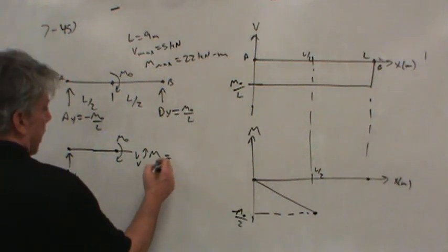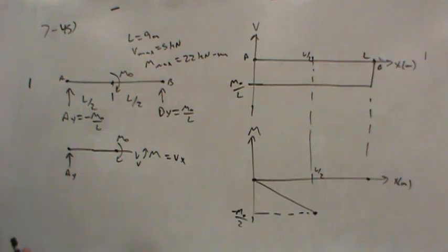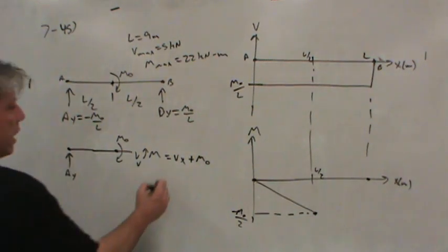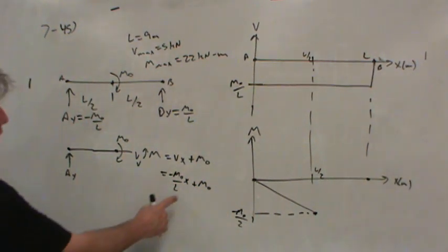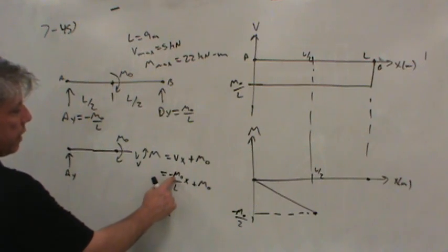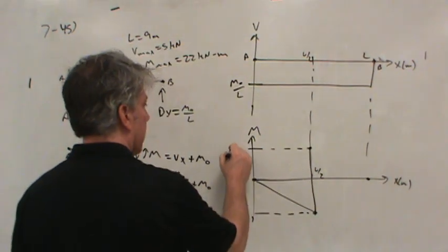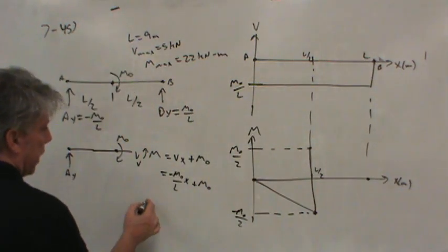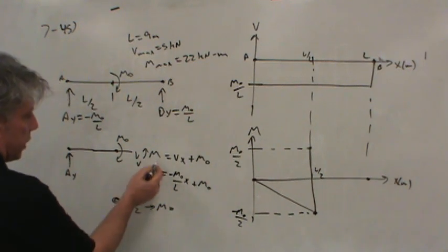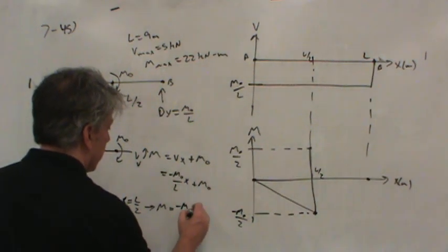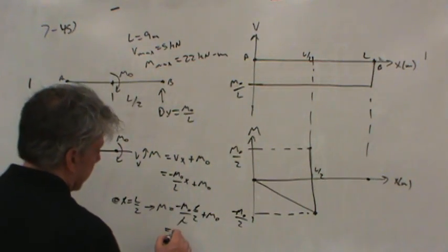But what about the moment? Well, now not only is there a moment that must be resisted due to the shear, but now there's also a moment that must be resisted due to the externally applied moment. Again, the shear is still negative M-naught over LX. And so look what's happened. If we plug in X equals L over 2, we'll get negative M-naught over 2 plus M-naught. So sure enough, the moment jumps up because of the point-moment load to M-naught over 2. We can prove that by saying at X equal to L over 2, the moment in the beam is negative M-naught over L times L over 2 plus M-naught. You see what happens is we get half of M-naught subtracted from M-naught, so we get M-naught over 2.